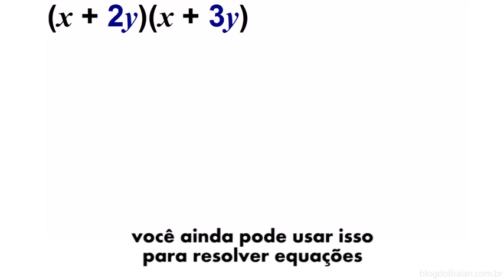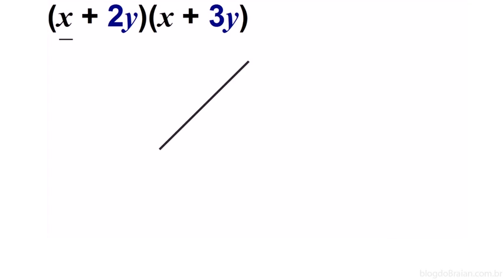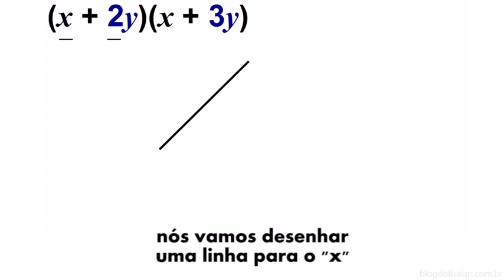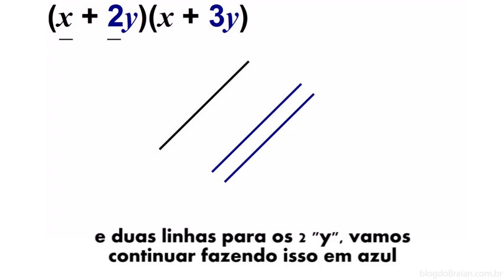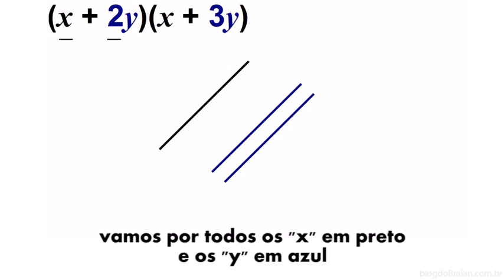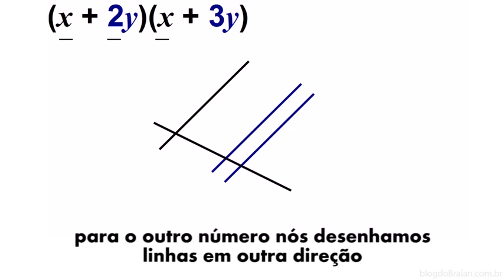You can even use it for algebraic equations. We'll draw one line for the x, and we'll draw two lines for the 2y, and we'll keep it in blue. We'll put all the x's in black and the y's in blue.